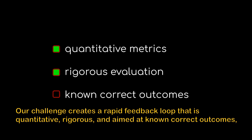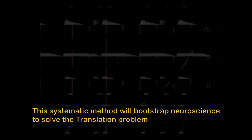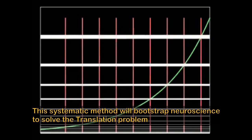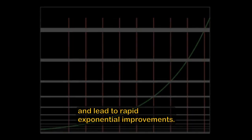Our challenge creates a rapid feedback loop that is quantitative, rigorous, and aimed at known correct outcomes, just like ImageNet or Kaggle competitions in AI. This systematic method will bootstrap neuroscience to solve the translation problem and lead to rapid exponential improvements.